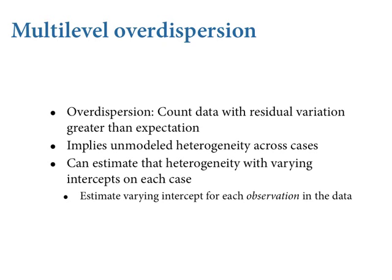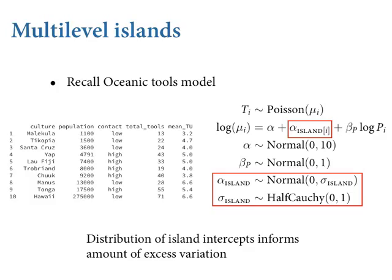Let's revisit the oceanic tools data from two weeks ago. There are 10 cases - 10 different oceanic societies. We're interested in the association between the magnitude of population size and the complexity of the toolkits. There's definitely over-dispersion in these data. If you model it as a pure Poisson distribution of tools conditioned on population size, you find there's a lot of excess variation beyond what the Poisson distribution expects. The variance equals the mean in a Poisson distribution, so it's actually really tight around the mean, and we nearly always see more than that.